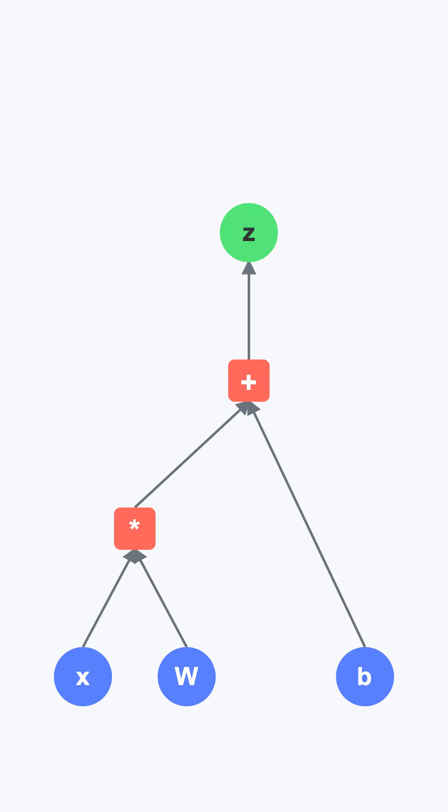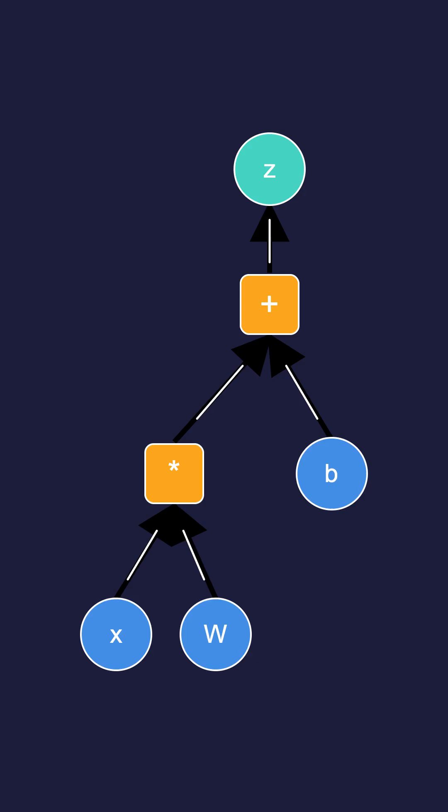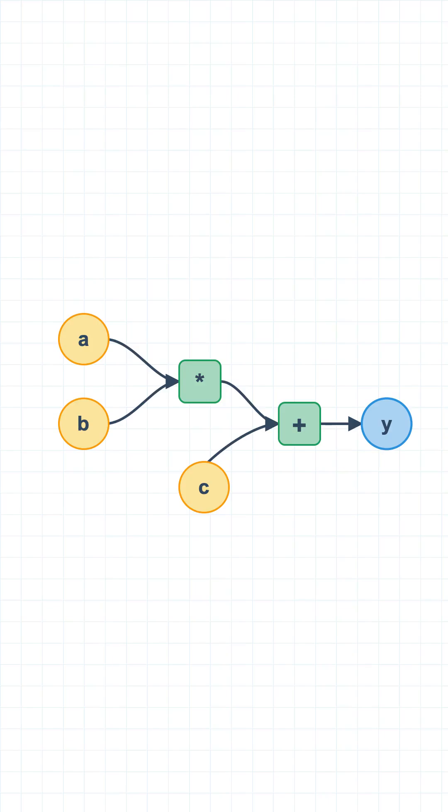A computational graph is just a visual way to represent this. Each circle or square is a node, either a variable or an operation. The arrows are edges, representing the flow of data or tensors between them. It is a literal blueprint of the calculation.